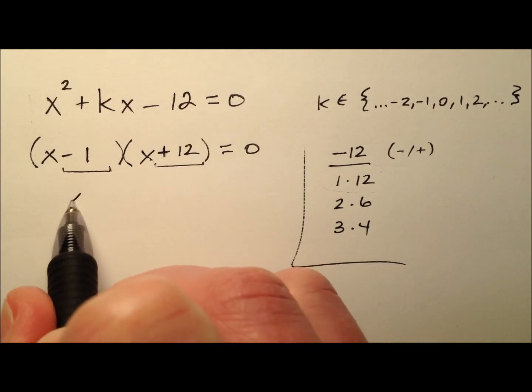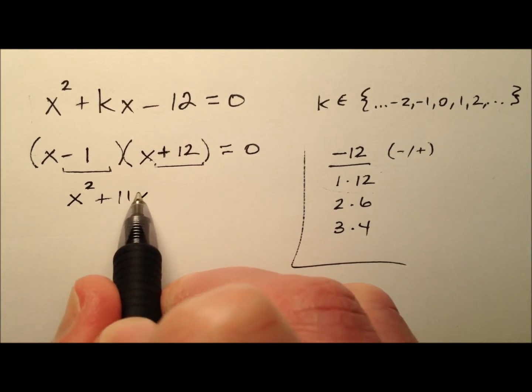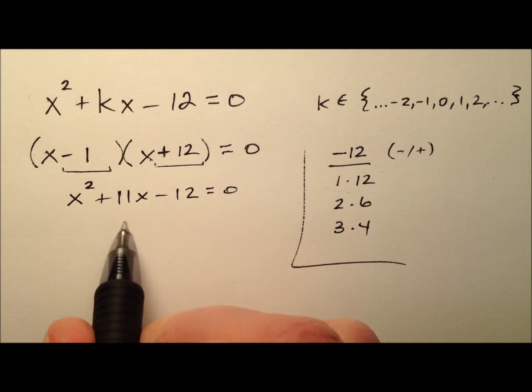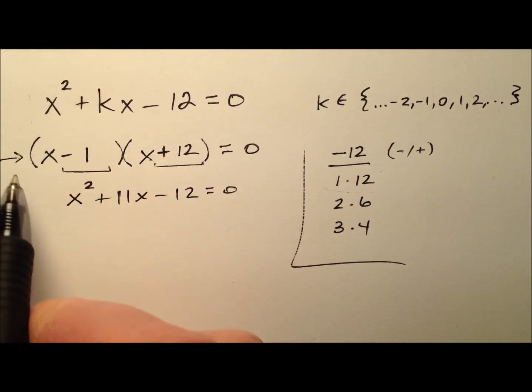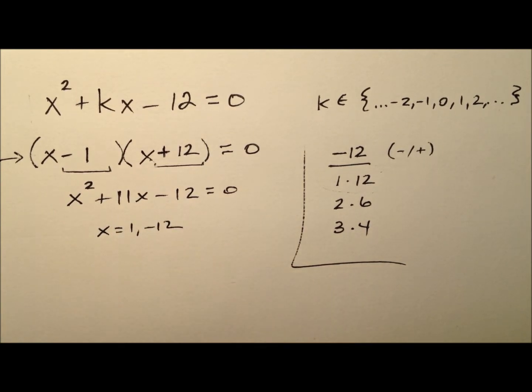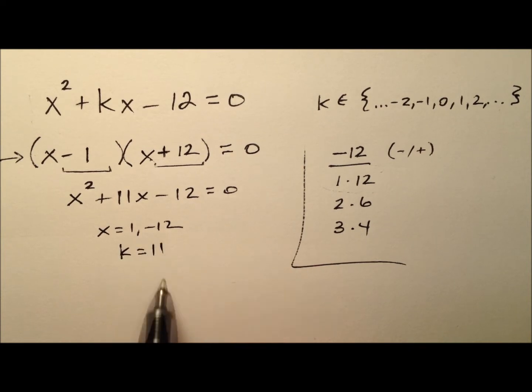When I multiply this out, I get x² + 11x - 12 = 0. In this case, my solutions based on this factorization will be x = 1 and x = -12, which are integer solutions, and my value of k will be positive 11.